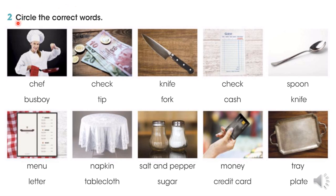¿Qué es lo que vamos a hacer? Vamos a circular las palabras correctas. Tenemos en esta actividad 10 imágenes. Debajo de cada imagen tenemos dos palabras. Vamos a circular la palabra correcta. Les voy a dar un ejemplo.